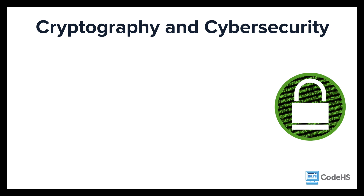Information and data can be protected by transforming it or encrypting it into a secure, unreadable format. Here are a few ways that cryptography works to keep our information safe.